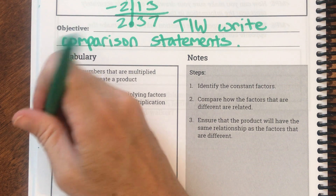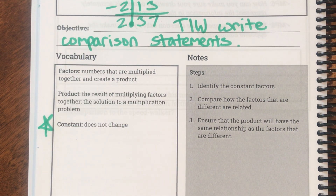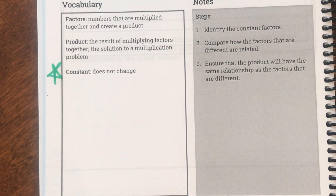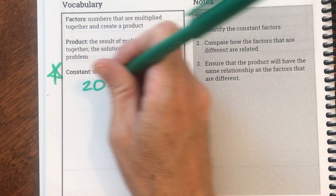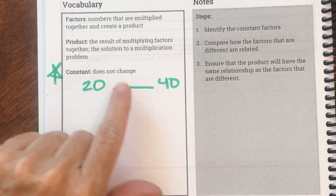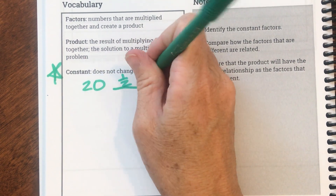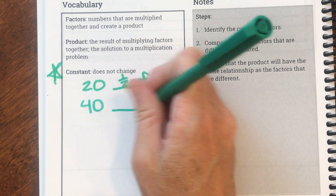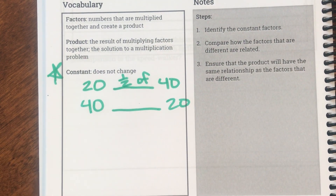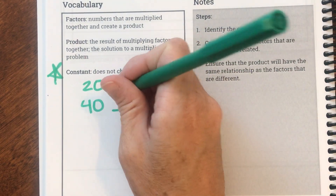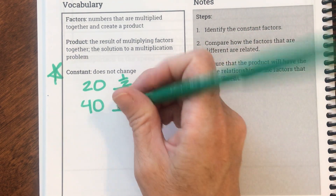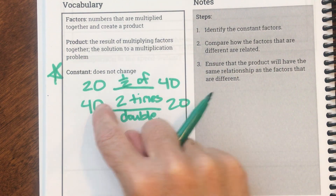Then this is the big one: a constant. A constant is something that does not change. You're going to see this a lot in every one of our problems — what's the constant? So if I was going to compare 20 to 40, what could I say? 20 is blank of 40. I could say 20 is half of 40. But what if I switch them? 40 is what to 20? I could say 40 is two times, or double. 40 is two times 20, or 40 is double 20.